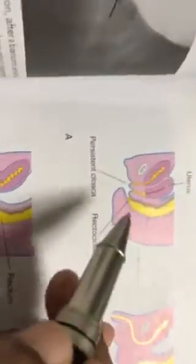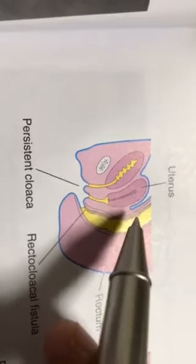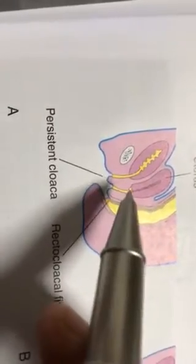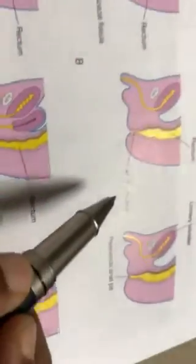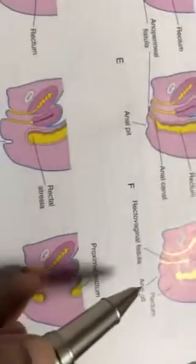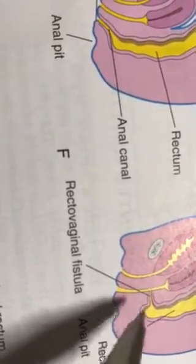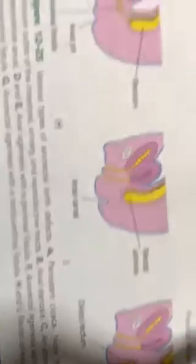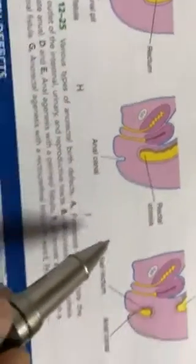Now, anorectal anomalies: sometimes only the rectum is formed and the anal canal is not formed. The rectum will then communicate with the urogenital system — that is called a rectovesical fistula, or if it communicates with the vagina, a rectovaginal fistula. There can also be a persistent cloaca and rectocloacal fistula. An anoperineal fistula may also occur. If the upper rectum is formed but the lower anal canal is not, in females the rectum communicates with the vagina — rectovaginal fistula — and in males with the urethra — rectourethral fistula.